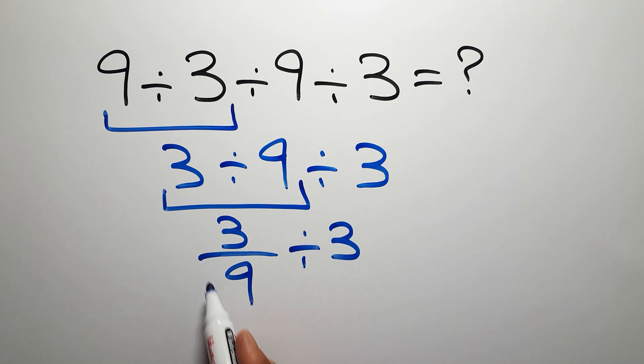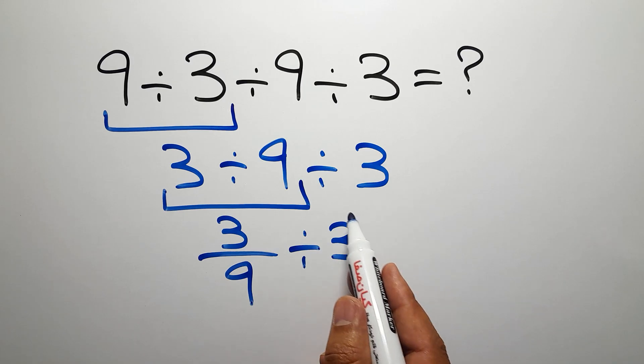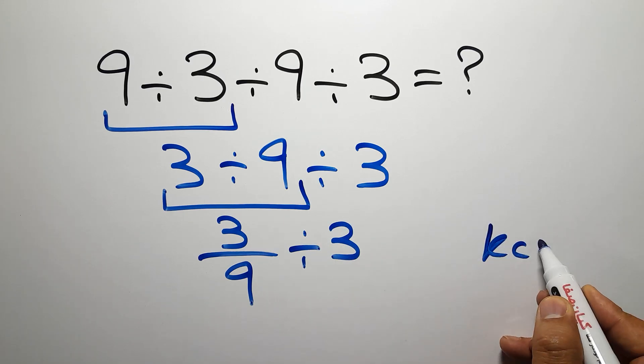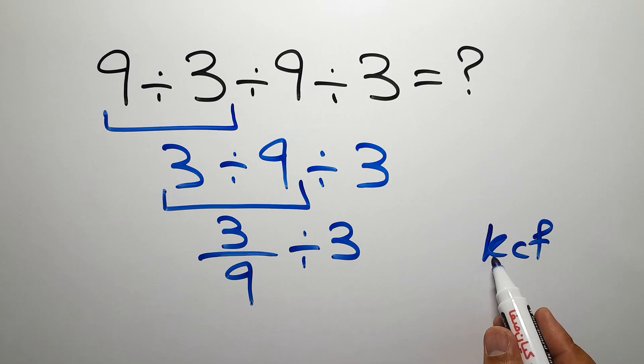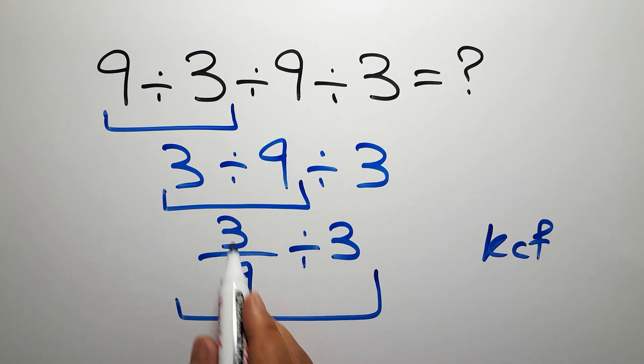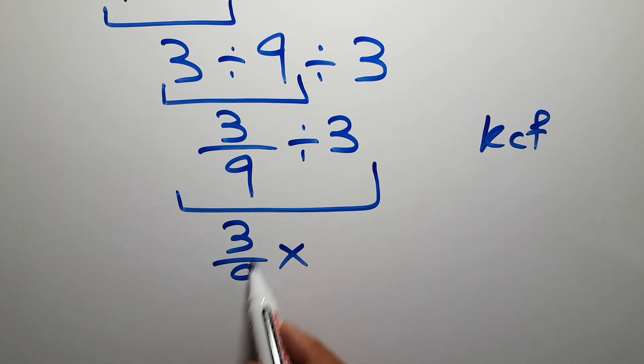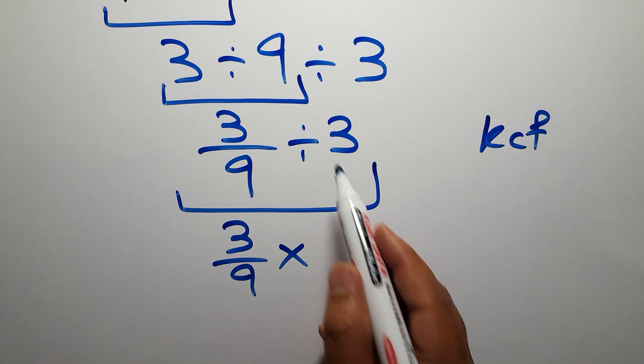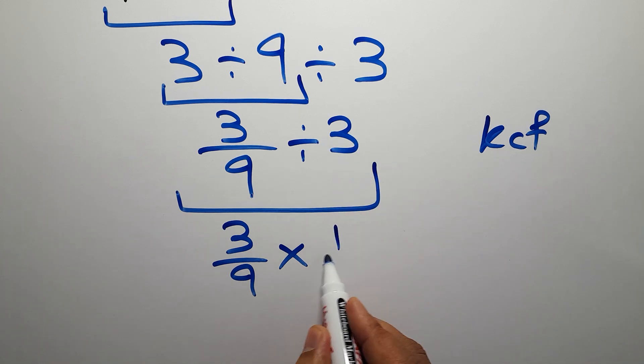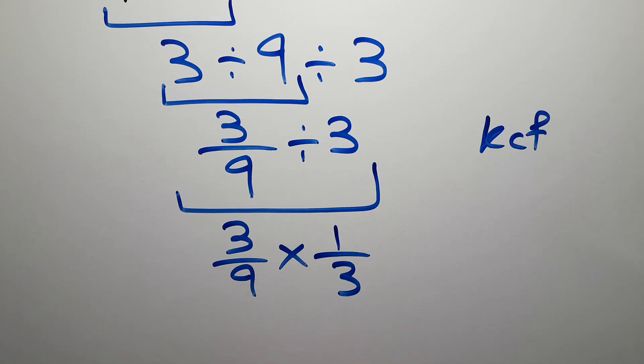We have this fraction divided by this number. According to the KCF rule, K stands for keep, C stands for change, and F stands for flip. We can write 3 over 9, then times. Keep the first fraction, change division to multiplication, and flip the second fraction: 1 over 3.